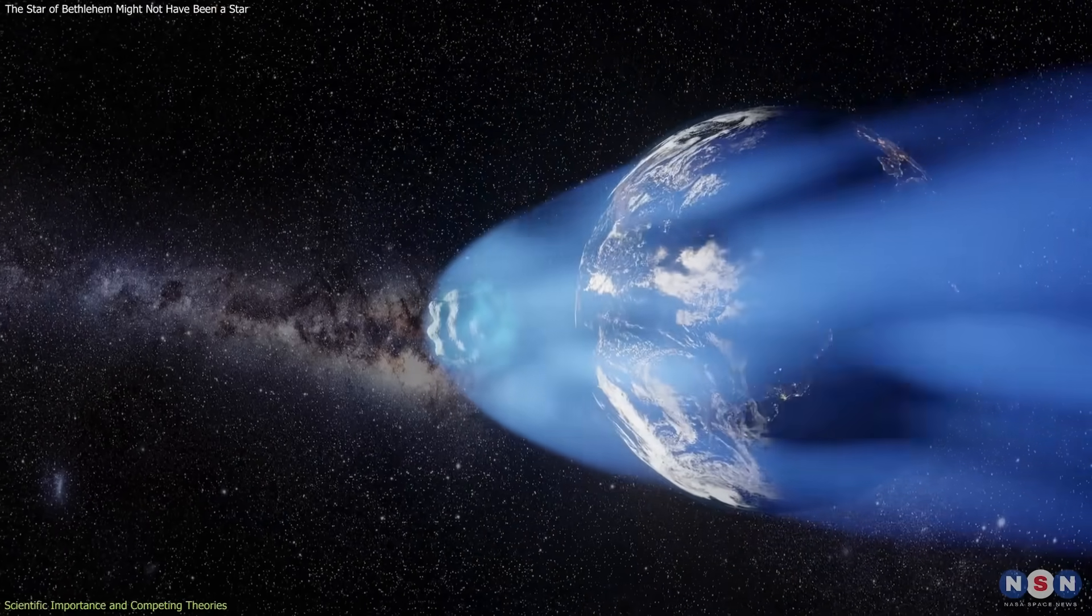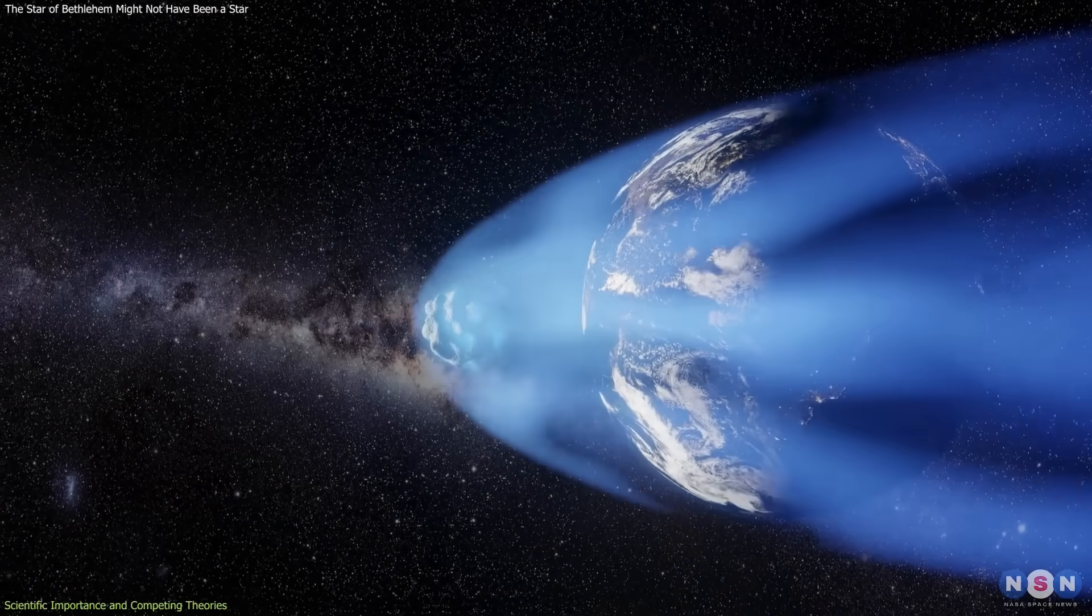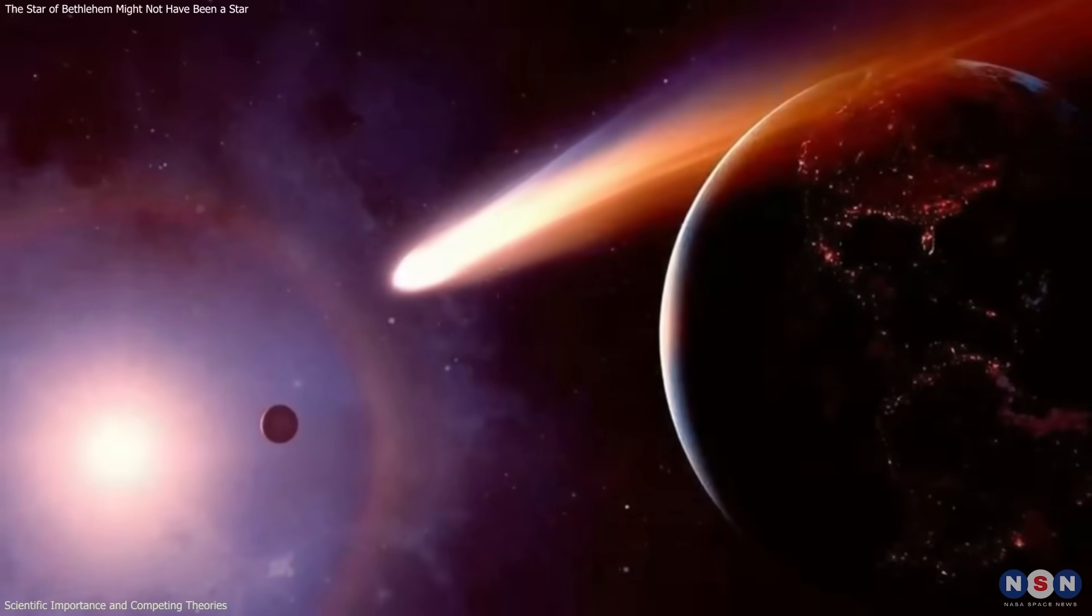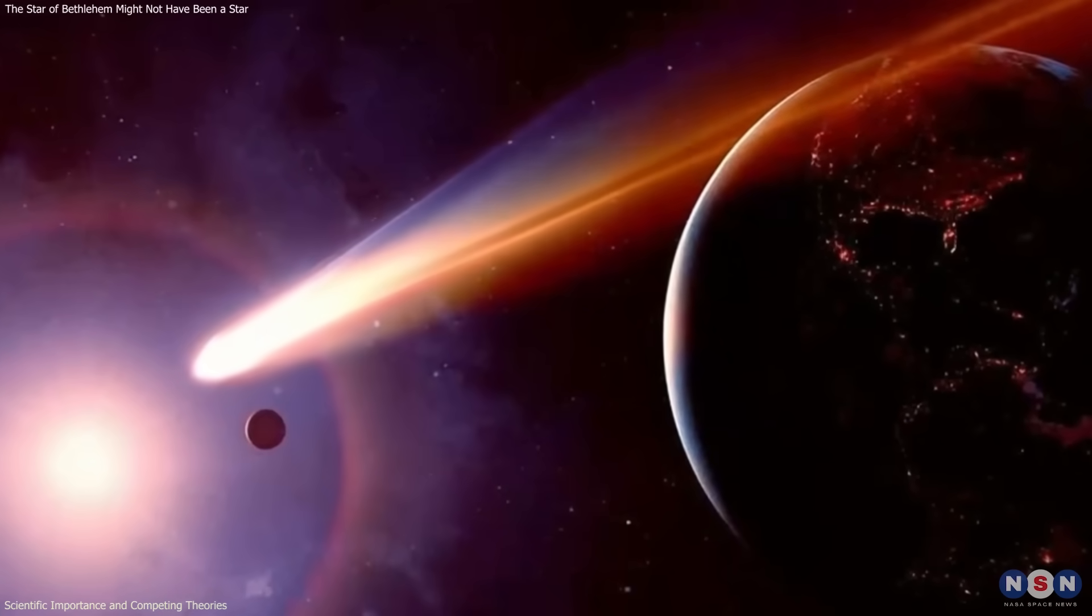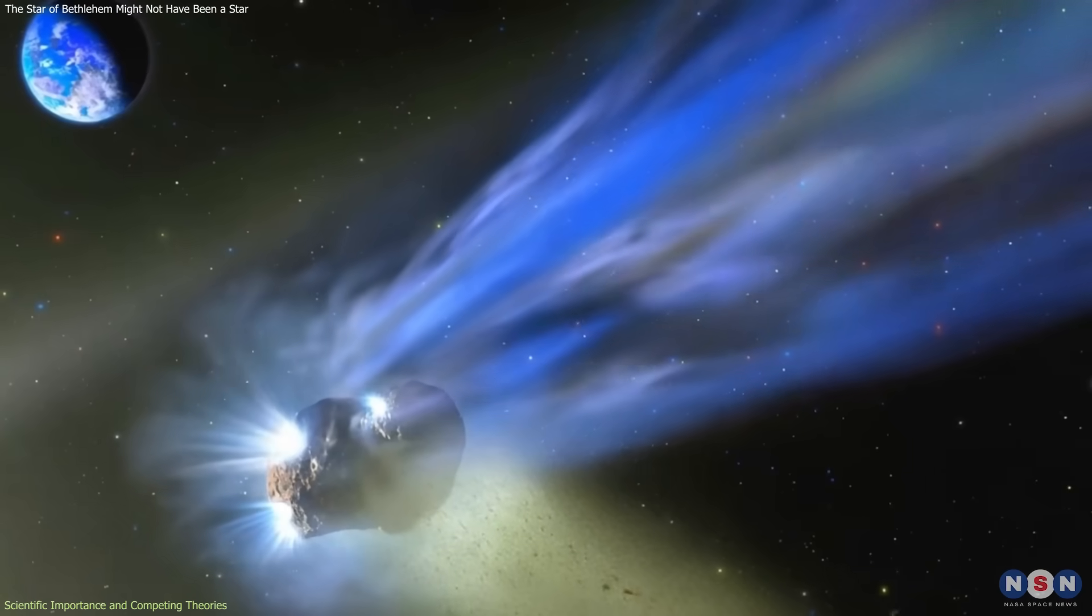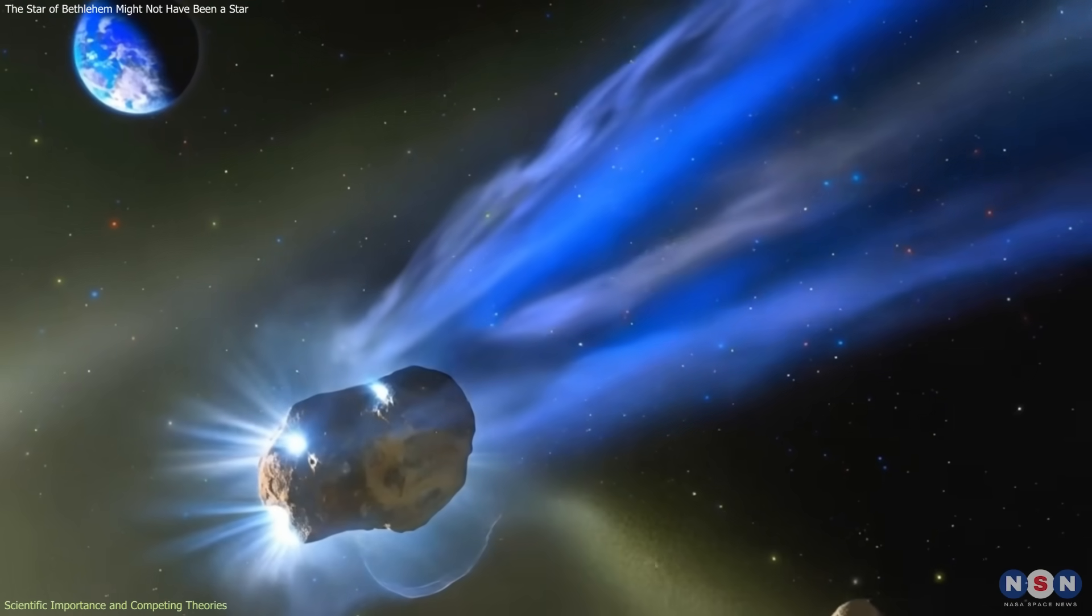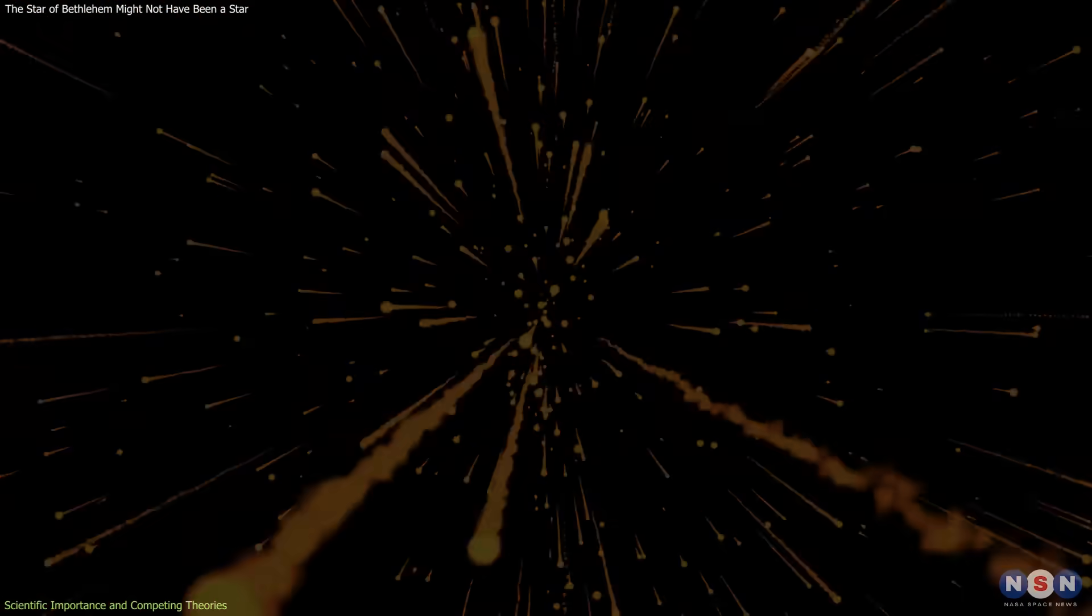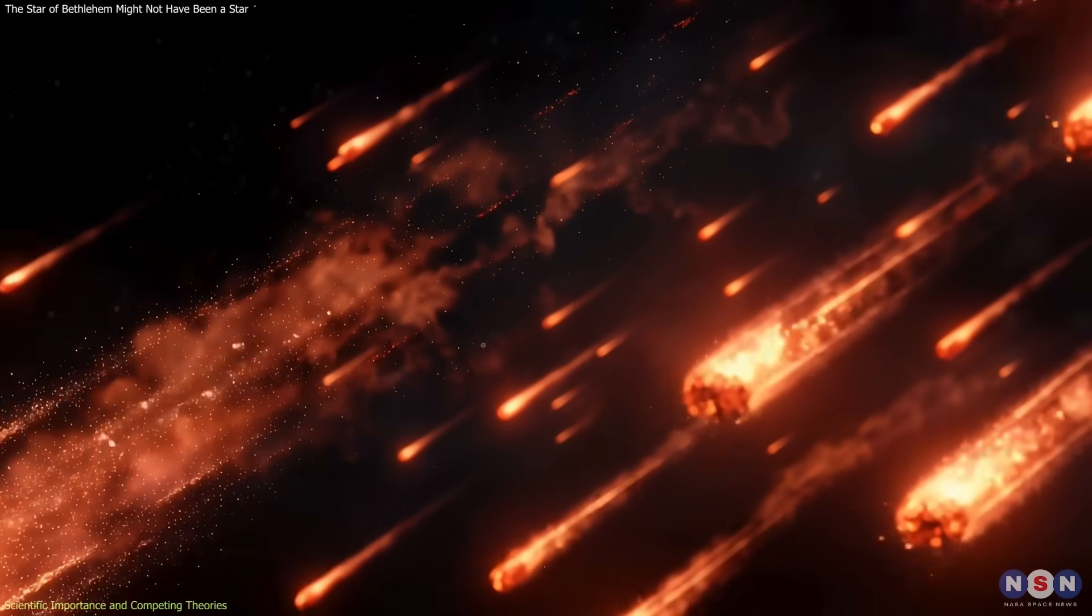If a comet did pass close to Earth around 5 BCE, the implications extend beyond historical interpretation. Such an encounter would likely have produced physical effects. As Earth moved through the comet's expansive dust cloud, the planet may have experienced intense meteor activity, with fine cometary material entering the atmosphere.